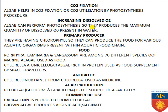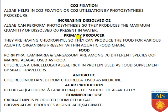Algae also increase dissolved oxygen because, as a by-product of photosynthesis, oxygen is produced and dissolved into the water, enhancing dissolved oxygen concentration. Algae are also primary producers — they are autotrophic organisms that produce their own food by photosynthesis and serve as the food source in aquatic habitats, starting the food chain. That is why they are considered primary producers.